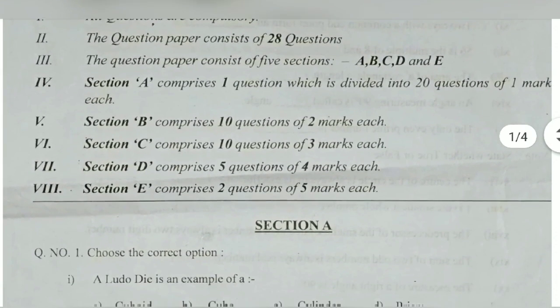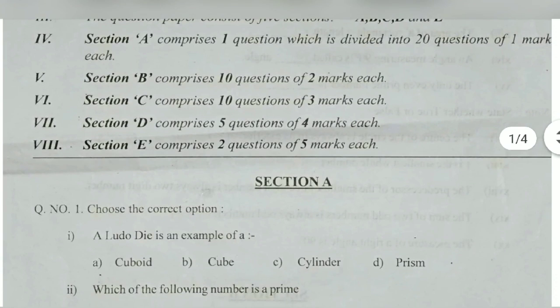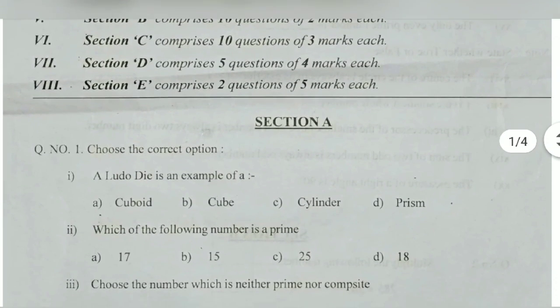Section A consists of 1 mark. Section B, 2 marks. C, 3 marks. D, 4 marks. And E, 5 marks.